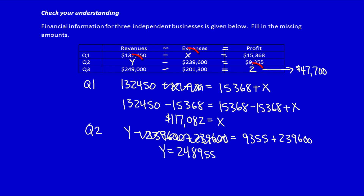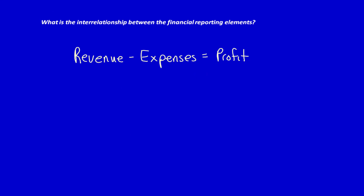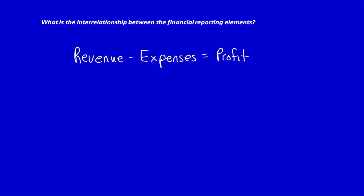So notice, no matter which one is unknown, we can solve for the unknown number. Our first equation is: revenue minus expenses equals profit. We'll move on to the next equation in the next video.